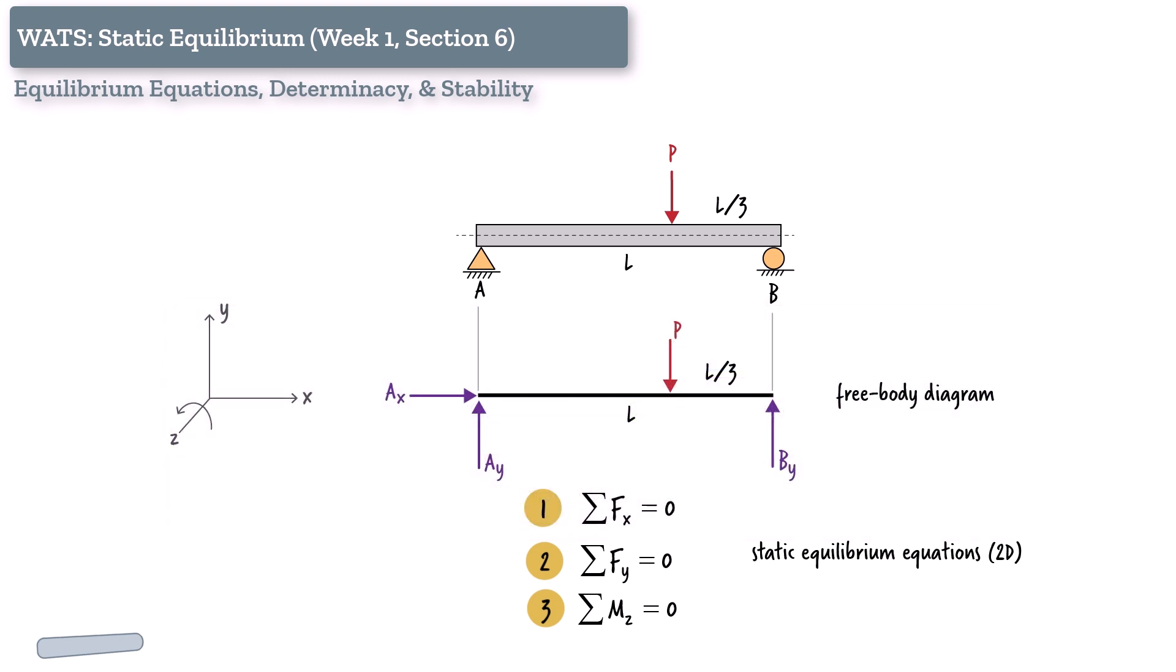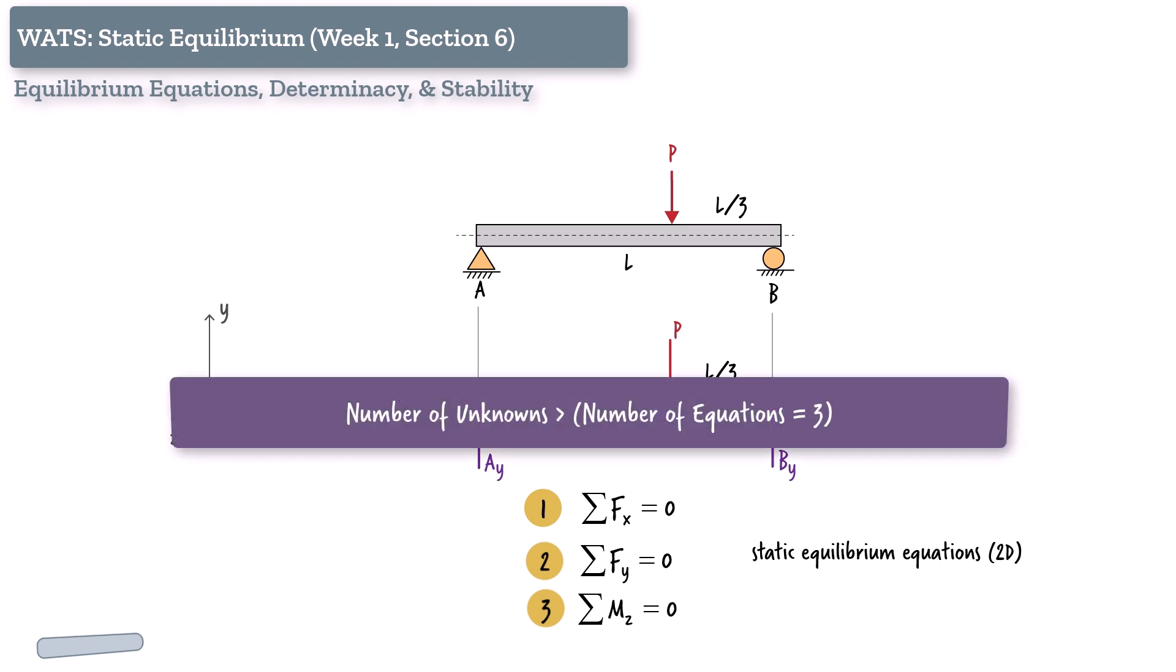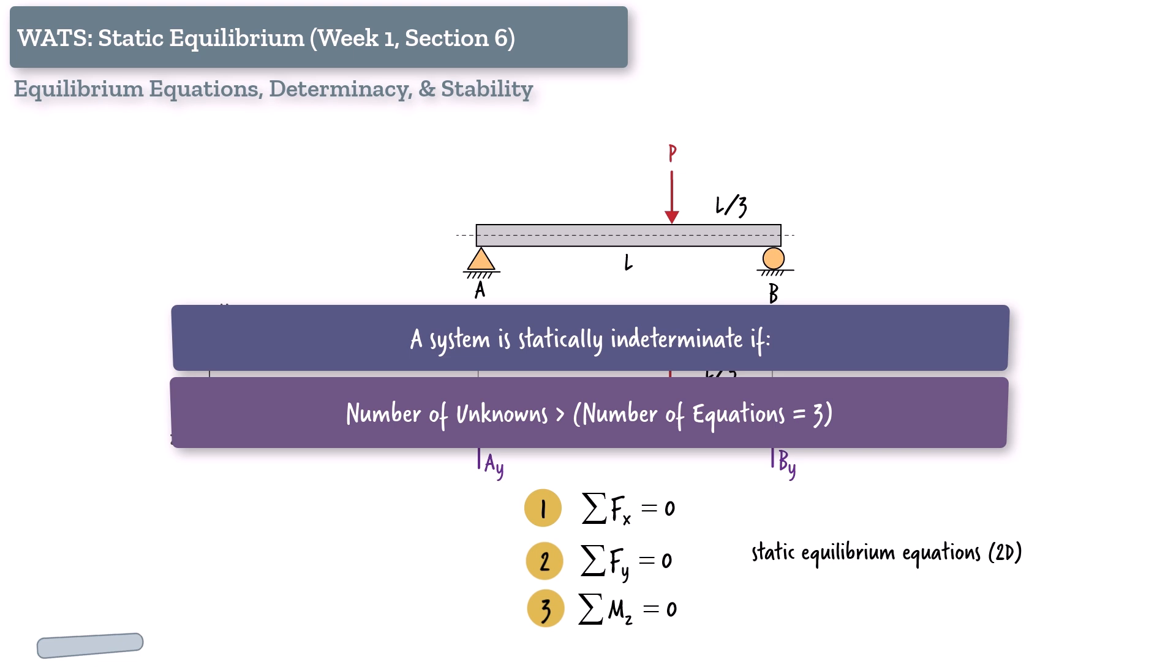What if the numbers don't match? Let's look at two other cases. If the number of unknowns is greater than three, we don't have enough equations to solve for all of them. In this situation, the structure is called statically indeterminate. To analyze such a structure, we'd need additional information, like how much the structure deforms or what materials it's made of.